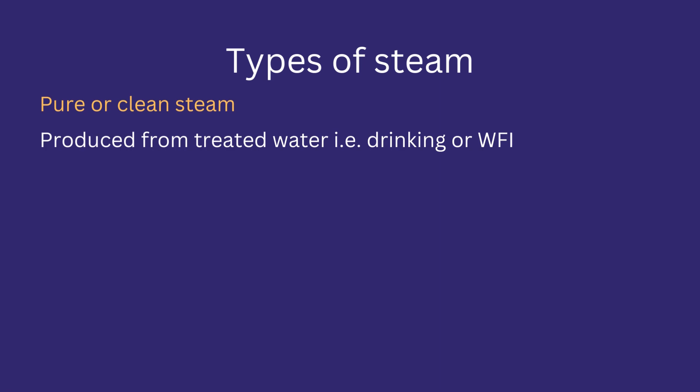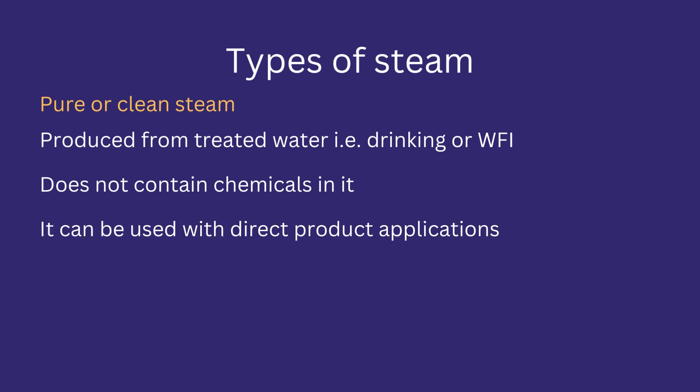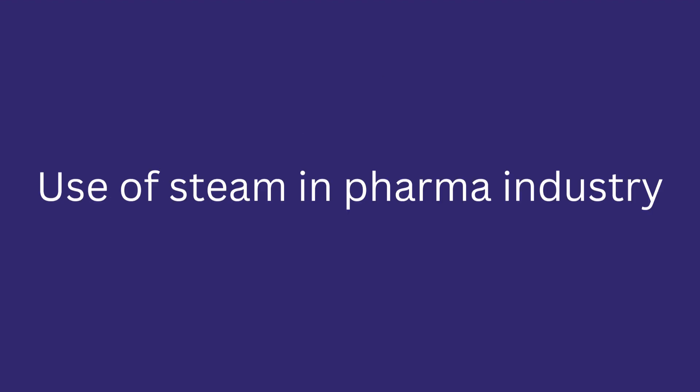Pure or clean steam is produced from treated water that meets standards equal to USP drinking water or water for injection (WFI). Pure or clean steam does not contain chemicals because the feed water does not contain them. This type of steam can be used for critical applications where the steam comes in direct contact with the product. As mentioned earlier, pure or clean steam is produced using a steam generator.